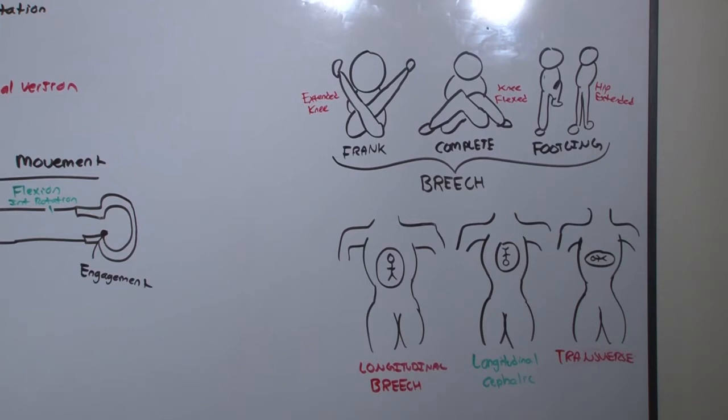The transverse lie, baby's axis is perpendicular to mom's. But a longitudinal lie may also be abnormal because if it is in a breached position, that is, baby's head is towards mom's head, it is in breech. Breech can then be subdivided into frank breech, complete breech, and footling breech.